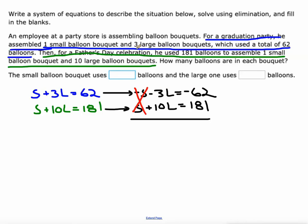The reason I did that is because now the coefficients of the S terms are opposites, they add up to zero. Now I can add up everything else: -3L + 10L is 7L, and -62 + 181 is 119. Then I can solve this equation to figure out the number of balloons in a large bouquet: 119 divided by 7 is 17, so 17 balloons in a large bouquet.